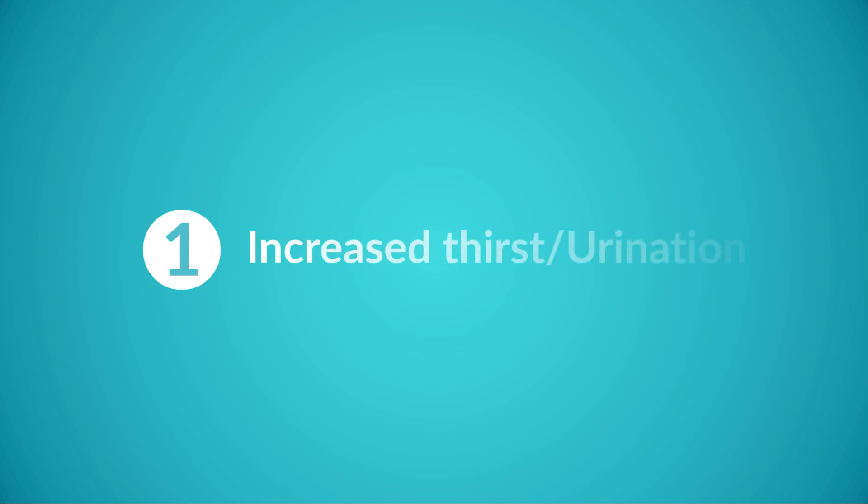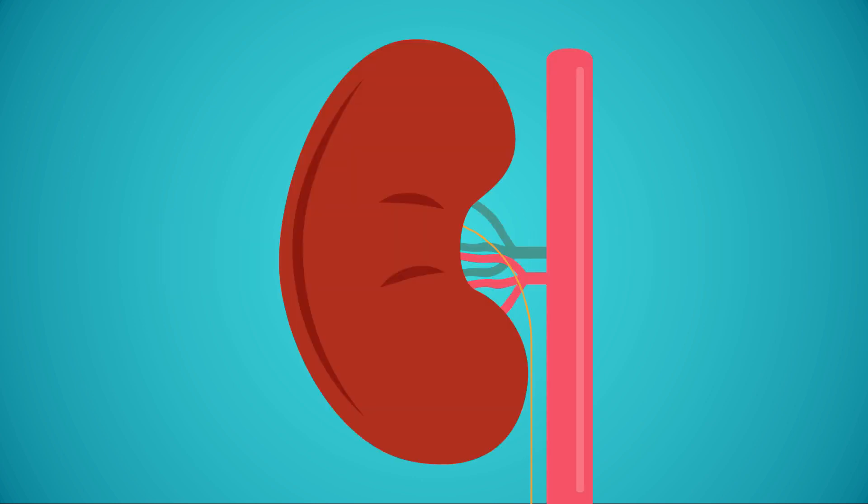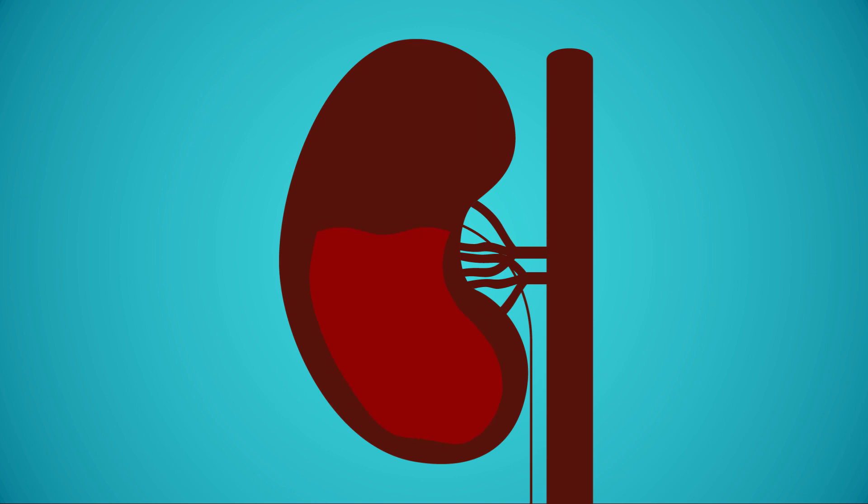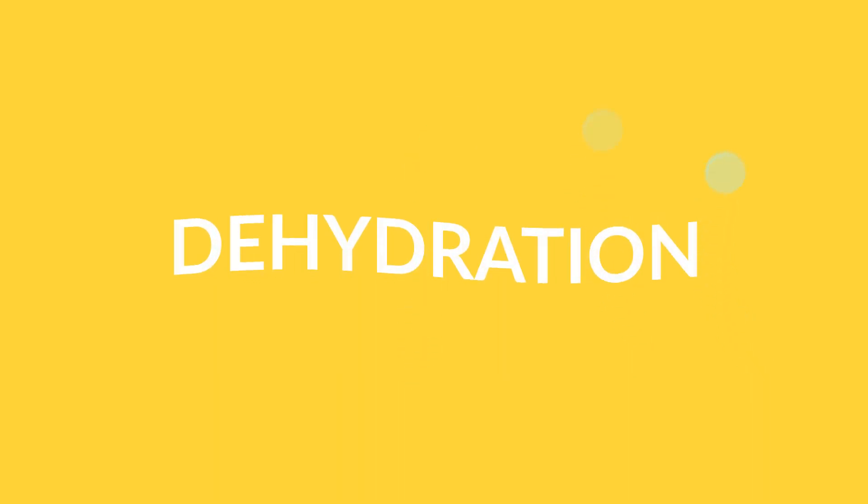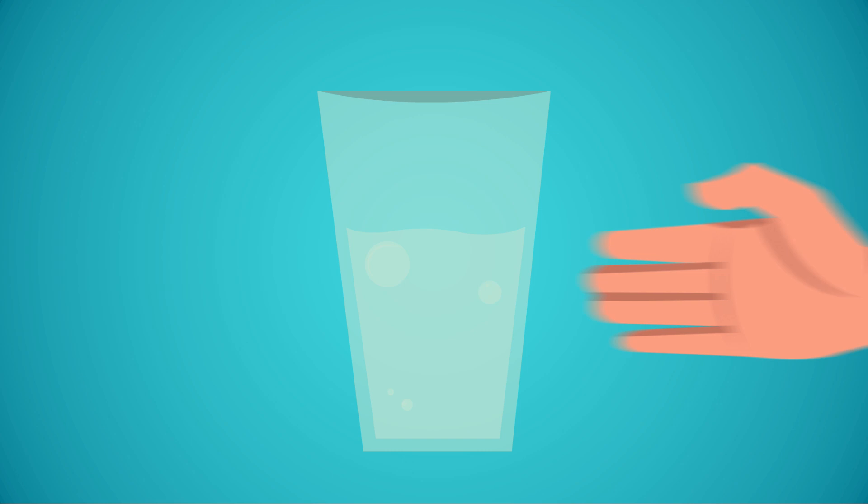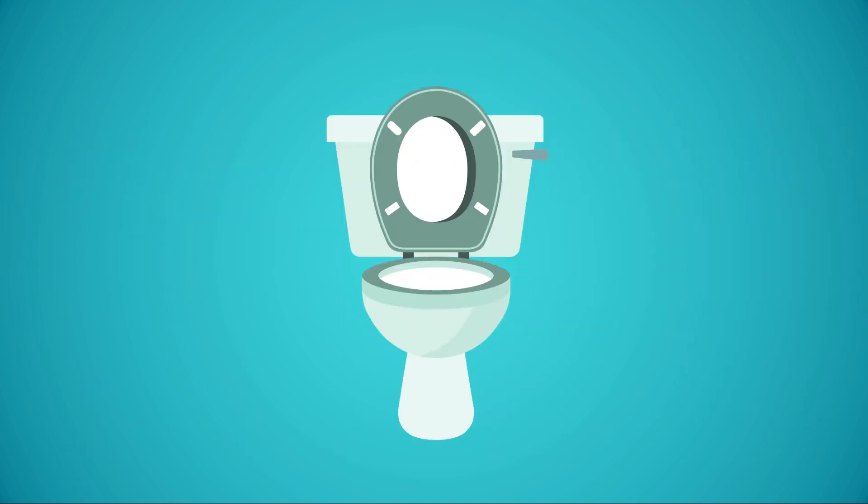1. Increased Thirst and Urination. Remember that our kidneys play a key role in regulating our blood sugar levels. It does this by filtering our blood while it absorbs any excess glucose. If, for example, you have high levels of blood sugar, the kidneys will not be able to keep up. Because of this, it will produce more urine, which will result in dehydration. This produces a vicious cycle. If you feel dehydrated, your instinct is to drink more, which results in needing to go to the bathroom more often.